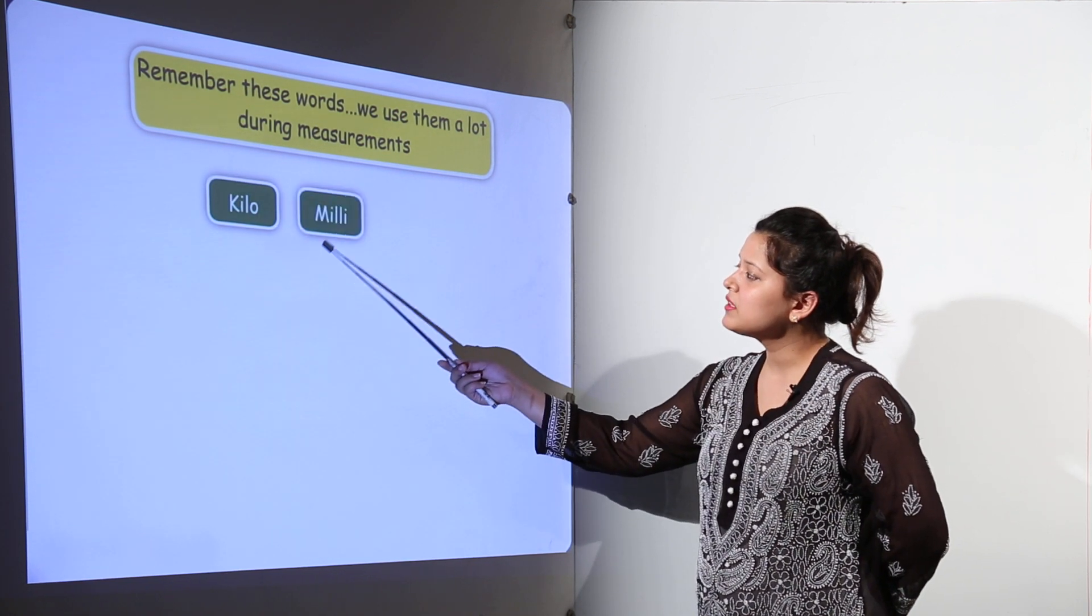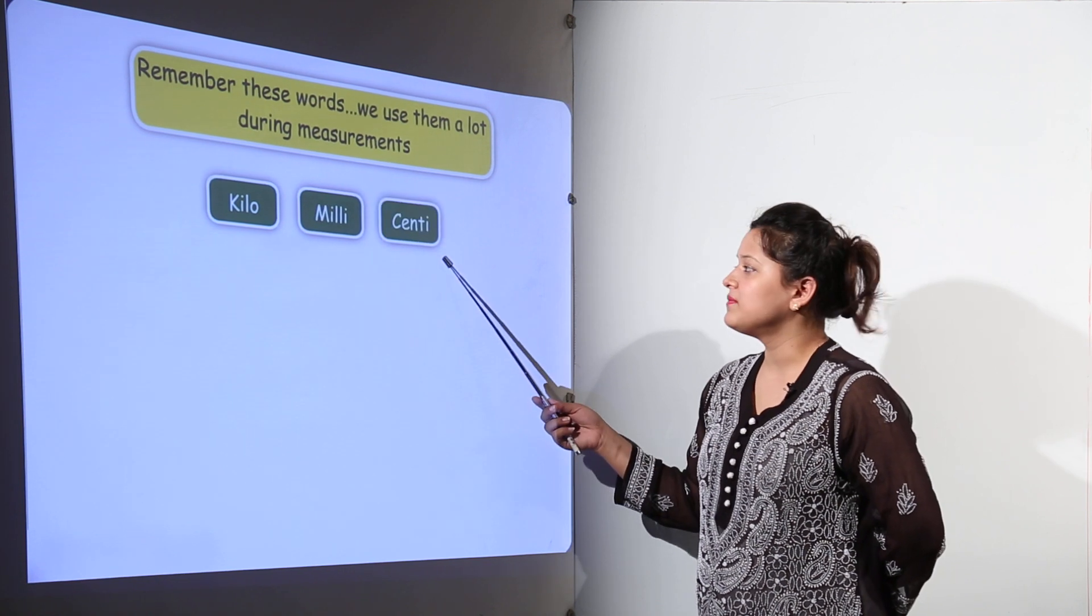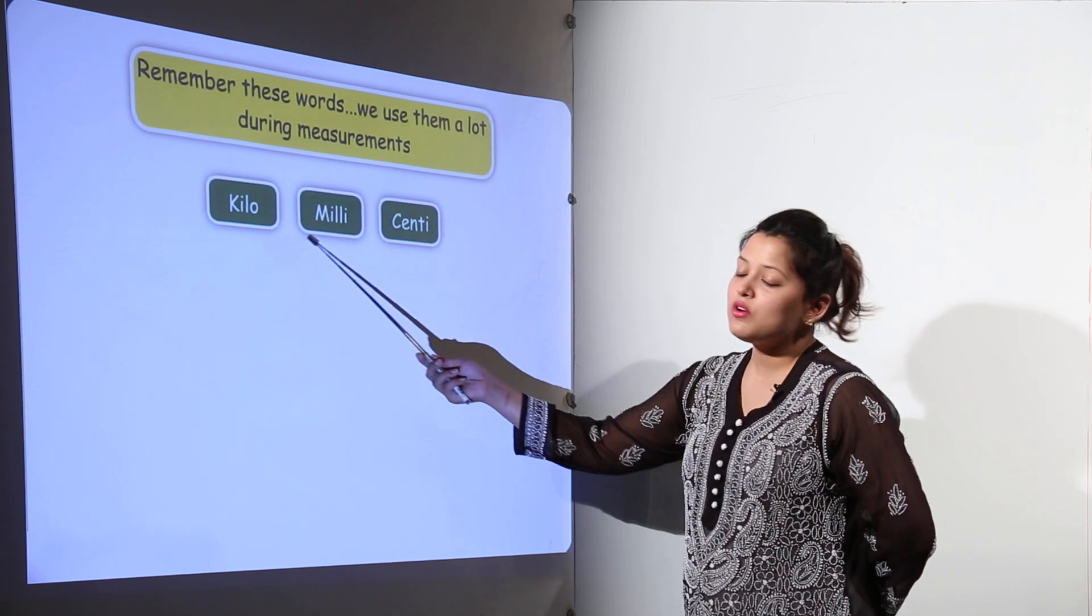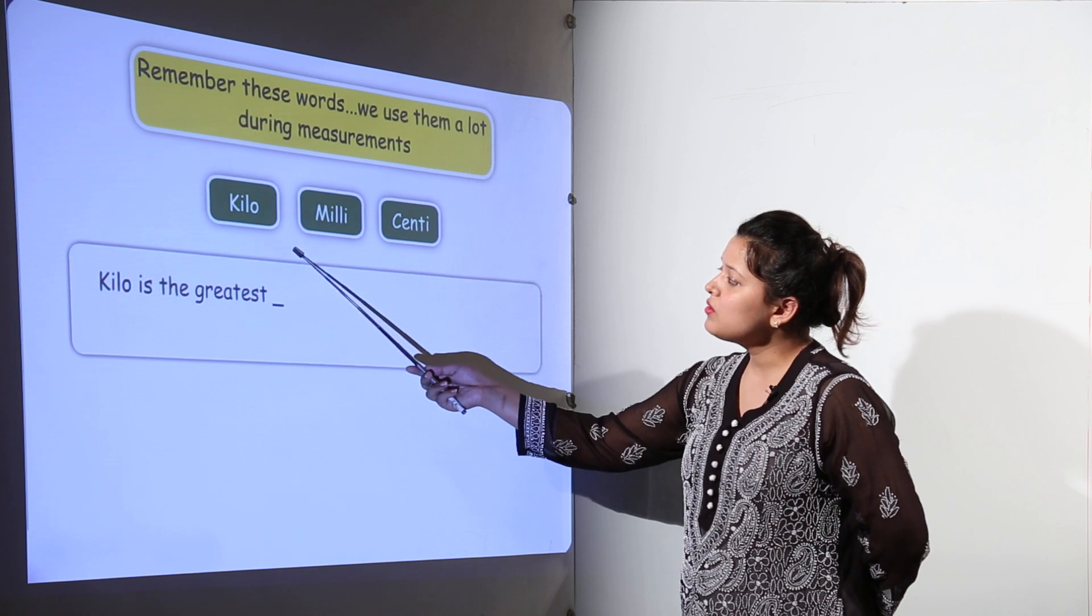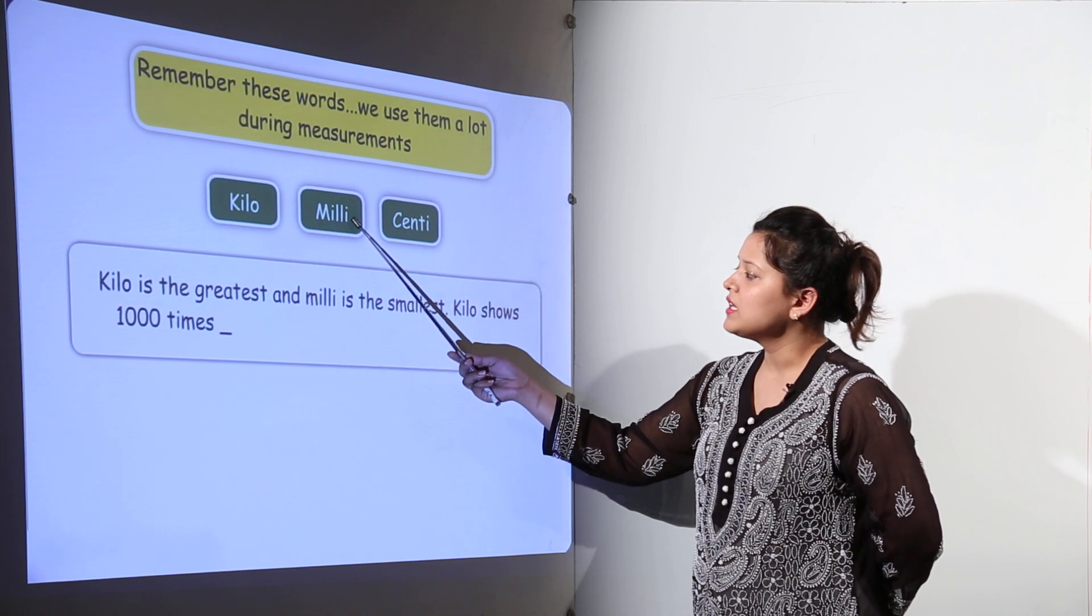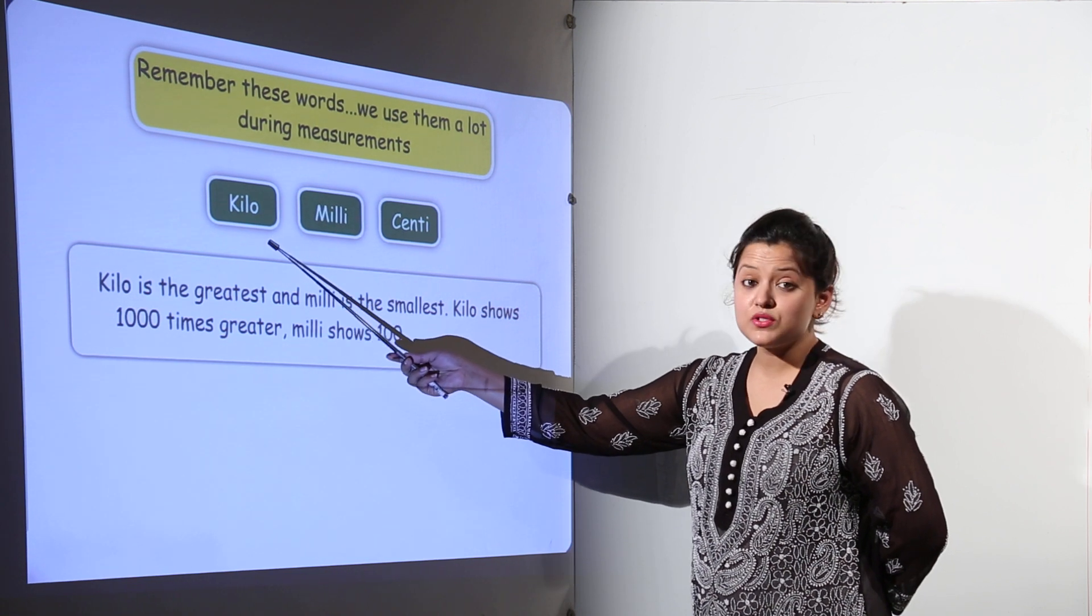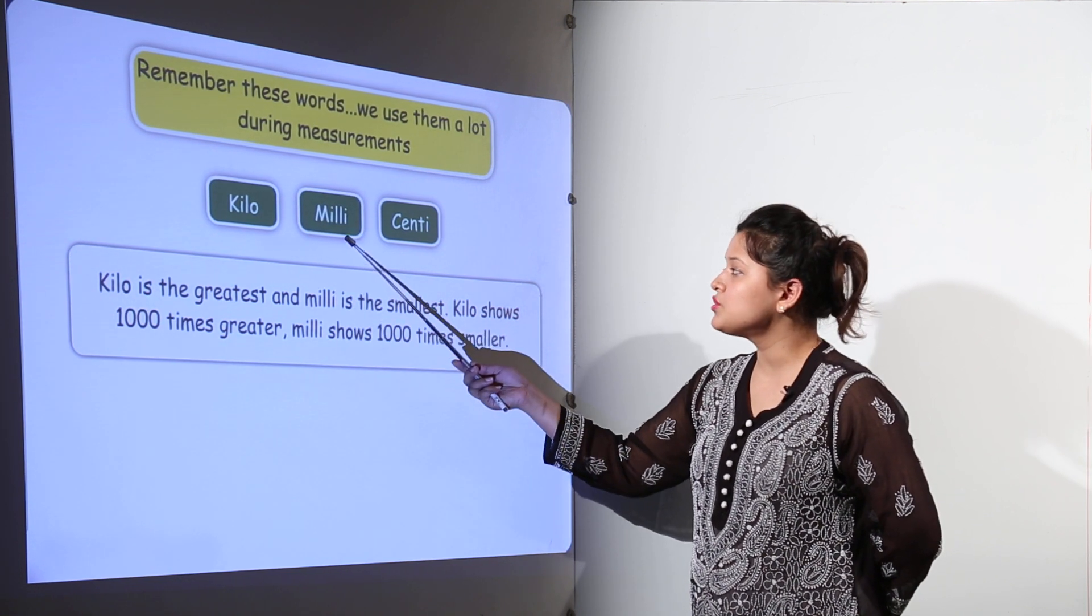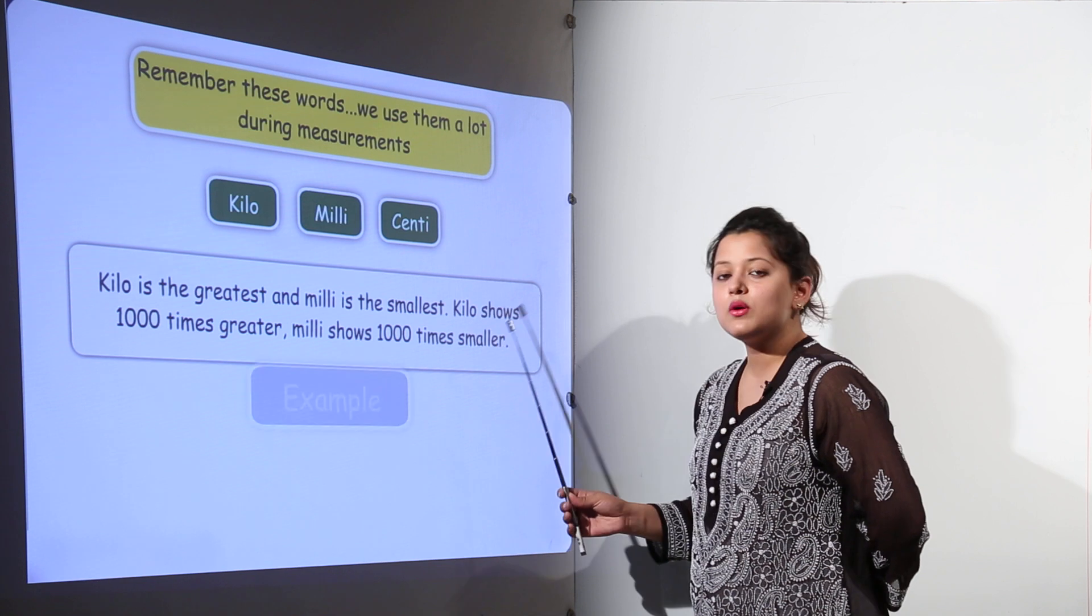That is kilo, milli and centi. What are the meaning of these three words? Kilo is the greatest out of the three and milli is the smallest. Kilo will be showing one thousand times greater value and milli shows one thousand times smaller value.